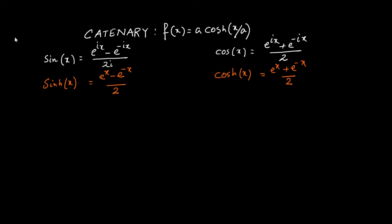An easy way to remember: you get the definition of a hyperbolic function if you replace the imaginary unit i in Euler's formula for circular functions with the real unit 1. If you replace i by 1 everywhere, you get the corresponding hyperbolic functions. This is the similarity between hyperbolic and circular functions.